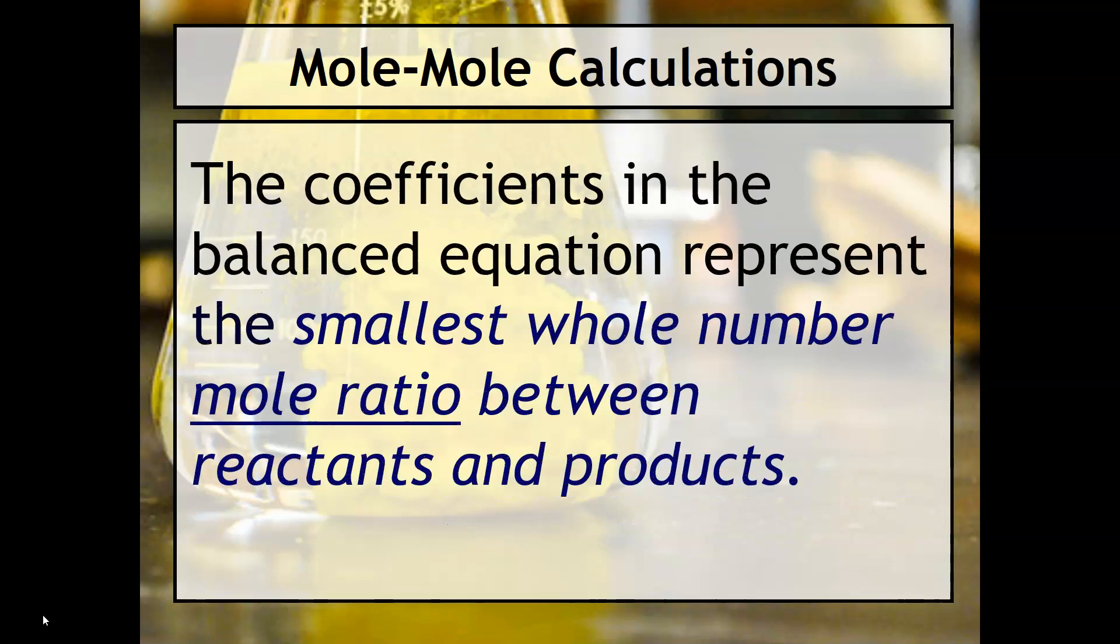What we are going to be performing is something called a mole-mole calculation. You'll understand why in a couple of minutes. So basically what we can do is we can use the coefficients in the balanced equation to represent the smallest whole number mole ratio between the reactants and products.